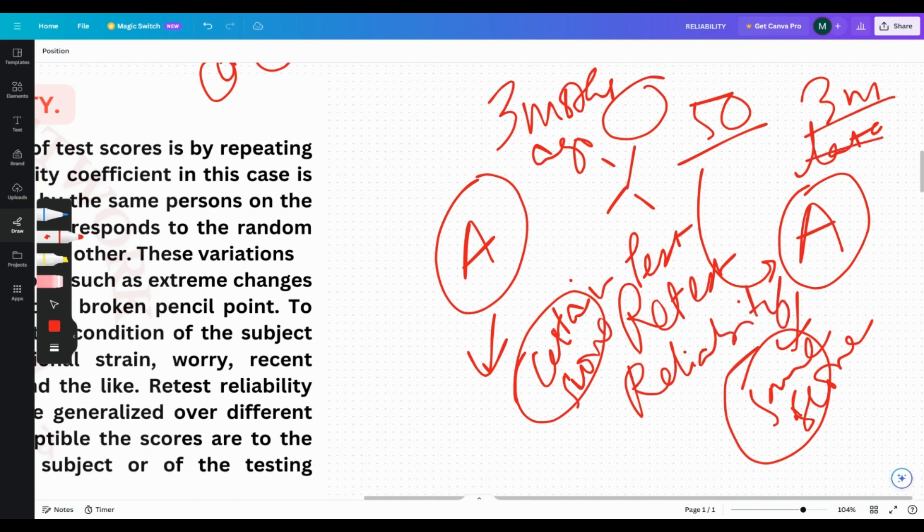Because after three months, if the scores of those 50 people are not matching—if here for some person it was 3 and here it's 6, for some person it was 8 but here it's 20—how is that happening? The test is not changing, so why are the scores changing? If the scores are changing, it means the test is not reliable. If the scores are nearer to each other, not changing preferably, then the test is reliable.